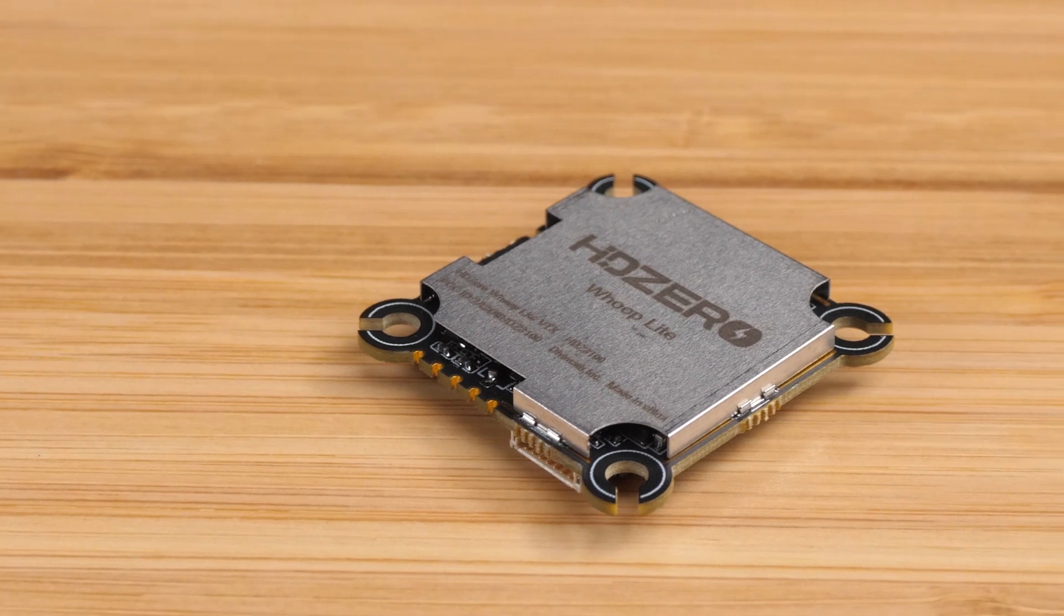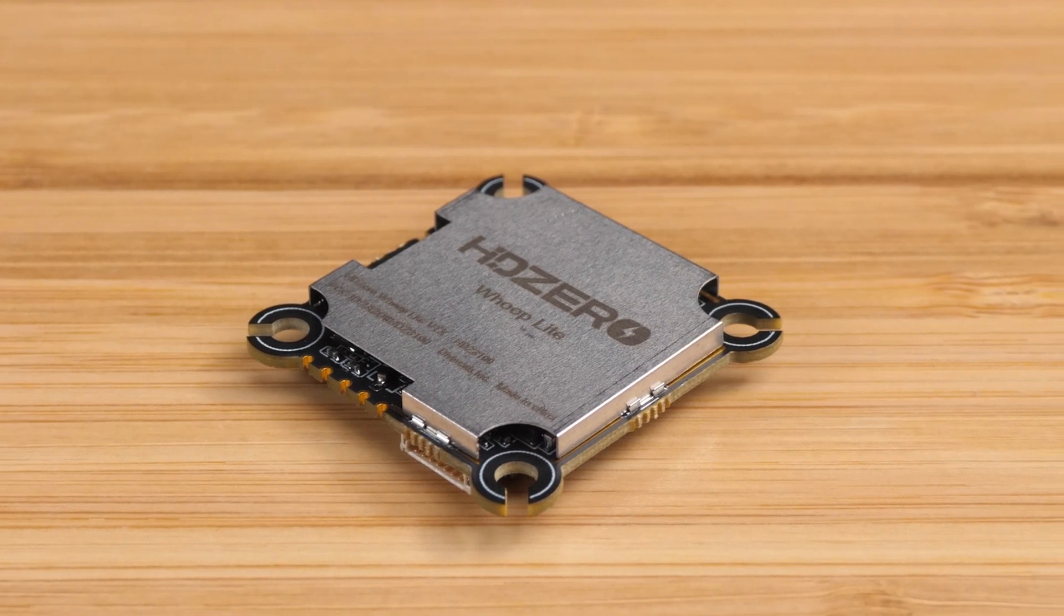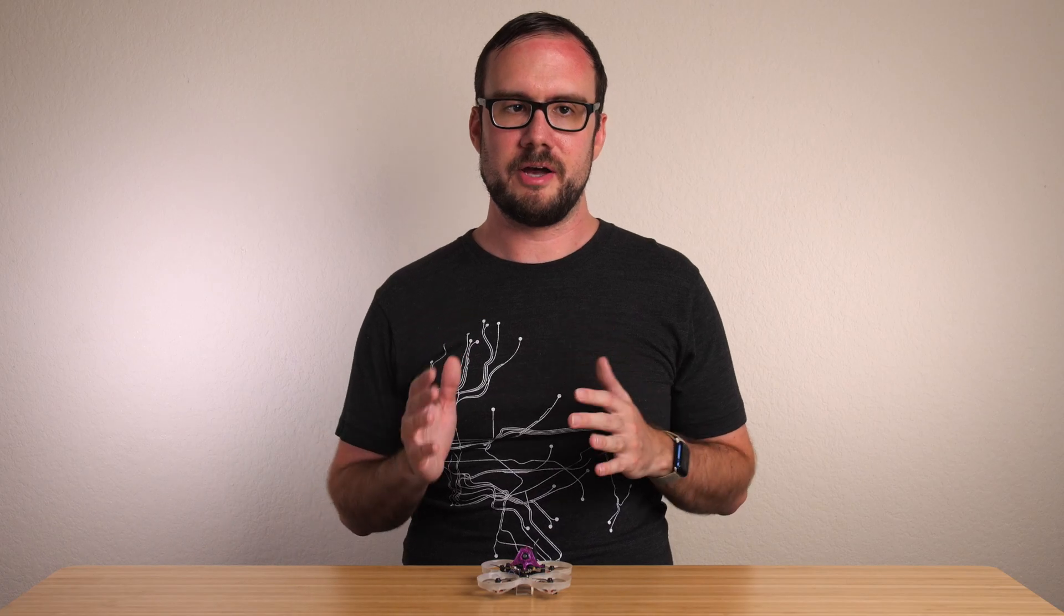You'll also notice that the mounting holes are much larger than the ones on the previous Whoop VTX. That's because this VTX is designed to be soft mounted but we'll cover that more in a moment.